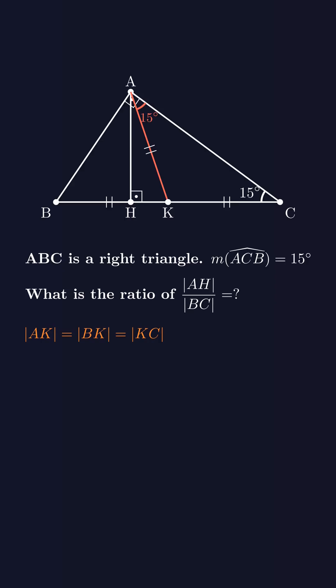Now, in a triangle, an exterior angle is equal to the sum of the two interior angles that are not adjacent to it. Then angle AKH becomes 30 degrees. Now it's getting useful, right?